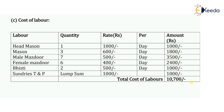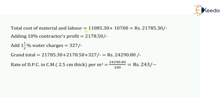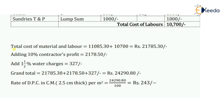Adding material and labor costs together: 11,085.30 + 10,700 = 21,785.30 rupees total cost of material and labor. Then we add 10% as contractor's profit: 10% of 21,785.30 = 2178.50 rupees. We also add 1.5% as water charges: 1.5% of 21,785.30 = 327 rupees.